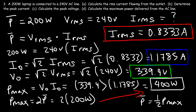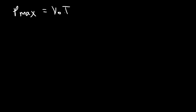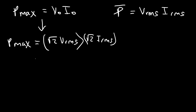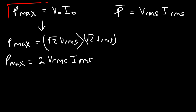Let's talk about some key formulas. The maximum power equals the peak voltage times the peak current, and the average power equals the RMS voltage times the RMS current. To express maximum power in terms of RMS values: the peak voltage is the square root of 2 times the RMS voltage, and the peak current is the square root of 2 times the RMS current. Square root of 2 times square root of 2 equals 2, so the maximum power is 2 times the RMS voltage times the RMS current.